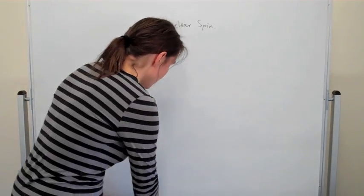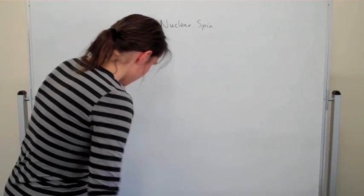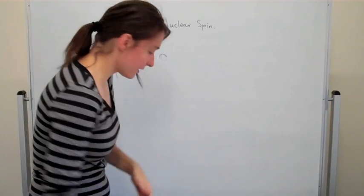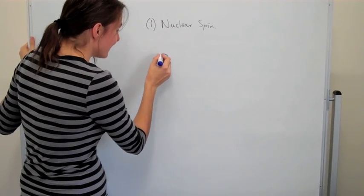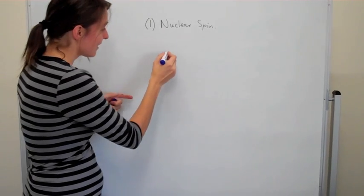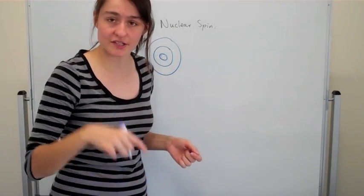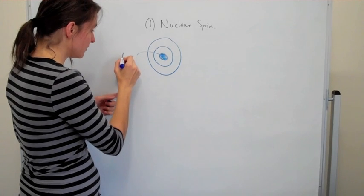The way it works is every single nucleus has a mass number in it. If you have a look at an atom, an atom is made up of electron shells and it's made up of a central nucleus here. So that's the nucleus. And those are the shells.